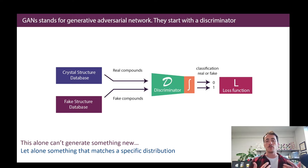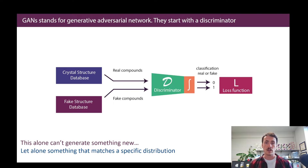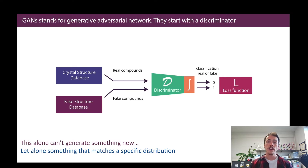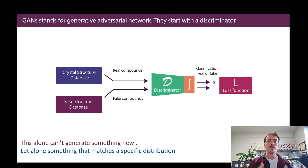In our case, since we're doing material science, that might be a crystal structure database, real pictures of microstructures, or real formulas. And then we're also going to pass it fake ones. The discriminator's job is to figure out real or fake and get it right. If it gets it wrong, the loss function gets imposed via backpropagation to update the weights of the neural network so that it gets better at its job.